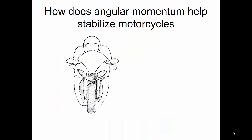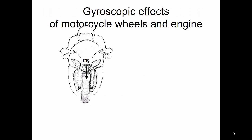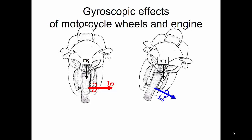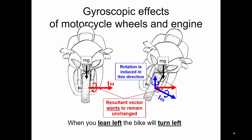How does angular momentum help to stabilize motorcycles? As the wheel spins, we have an angular momentum that occurs, and there's also angular momentum from the spinning of the engine. Looking at the gyroscopic effects of motorcycle wheels and the spinning engine: if I have a motorcycle with weight mg driving down the road, I have angular momentum from the spinning wheels and engine. If I then lean on my motorcycle, my angular momentum would change perpendicular to the wheel rotation. However, the resultant vector wants to remain unchanged, so a rotation is induced about the z-axis. When I lean left, the bike turns left; if I lean right, the bike turns right. This is due to conservation of angular momentum.